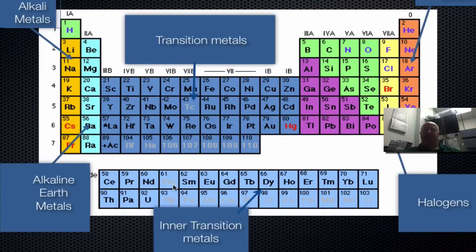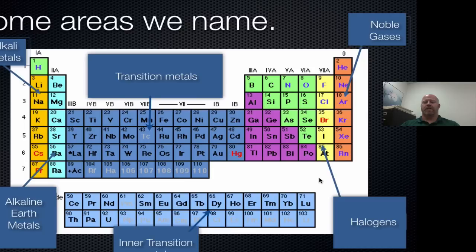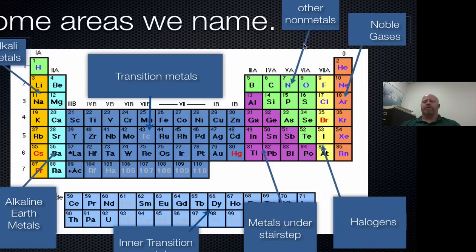Down here, the F block, we give the term inner transition metals. So we have transition metals in the D block, alkali metals, alkaline earth metals, inner transition metals down in the F block, halogens, and noble gases. Two other groups visible on the table are a pink region and a green region. The pink or purplish elements below the stair-stepping line we informally call metals under the stair-step. The green elements we call other non-metals — your noble gases and halogens are also non-metals, but these are another group of non-metals without a very specific name.